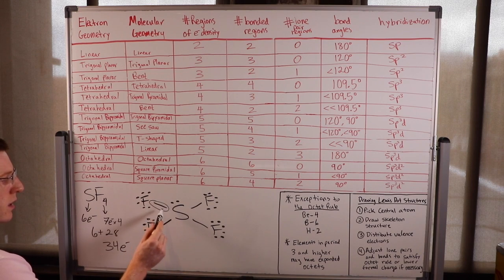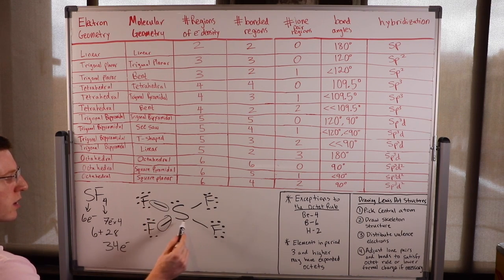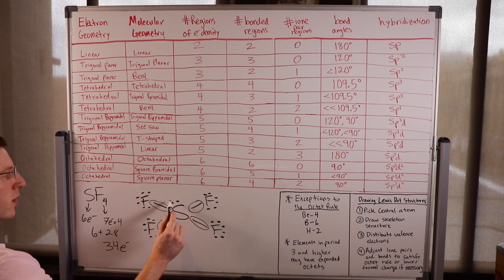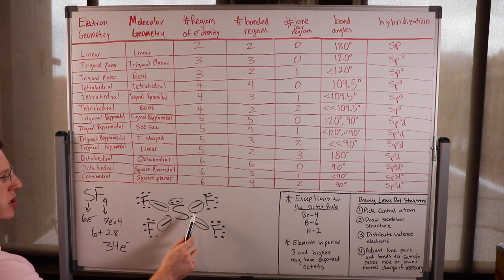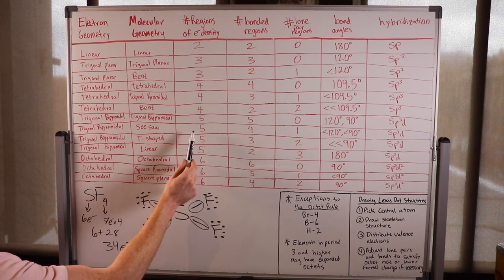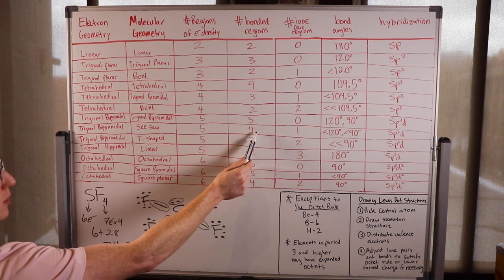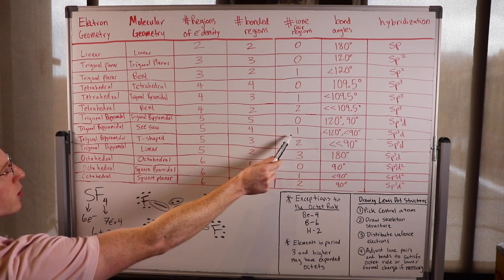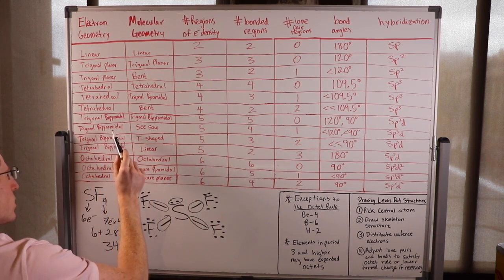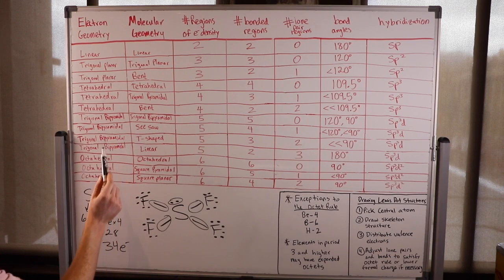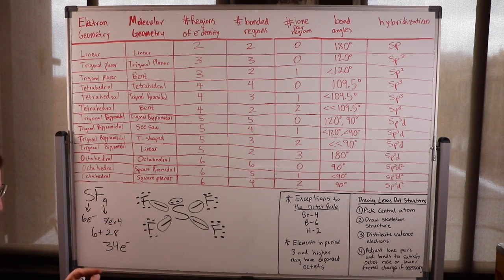We've got five regions of electron density: one lone pair and four bonded regions. With five regions of electron density, four bonded regions, and one lone pair, the electron geometry is trigonal bipyramidal, while the molecular geometry — its actual shape — is seesaw.